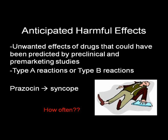Anticipated harmful effects are the unwanted effects of drugs that could have been predicted on the basis of preclinical and pre-marketing studies. These could be type A or type B reactions. An example is the syncope that occurs after patients take the first dose of prazosin. Even though this effect was known to occur at the time of marketing based on its mechanism of action, how often the event occurred is still uncertain.